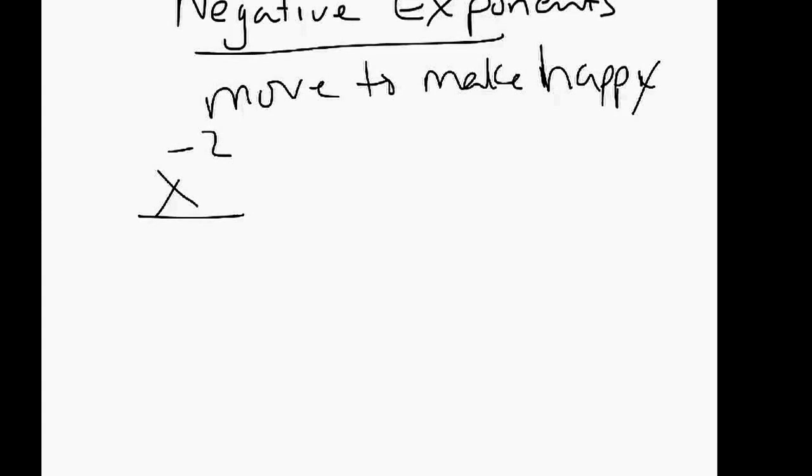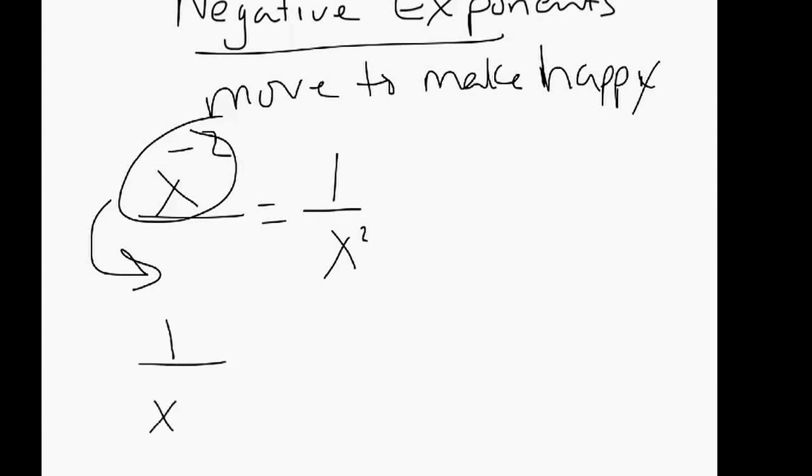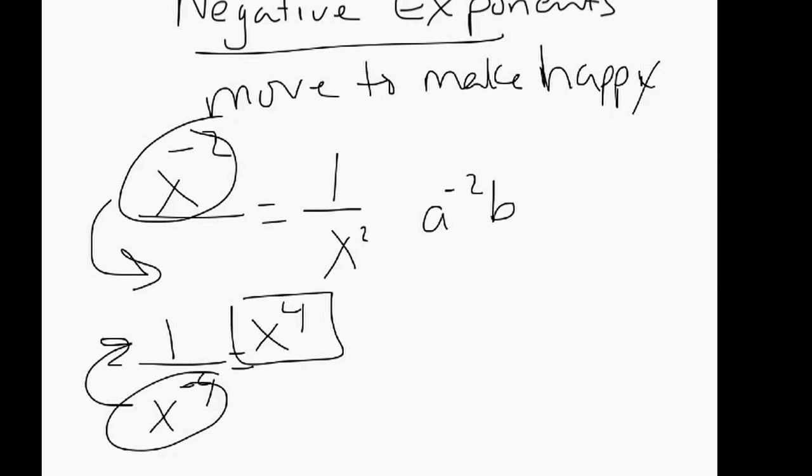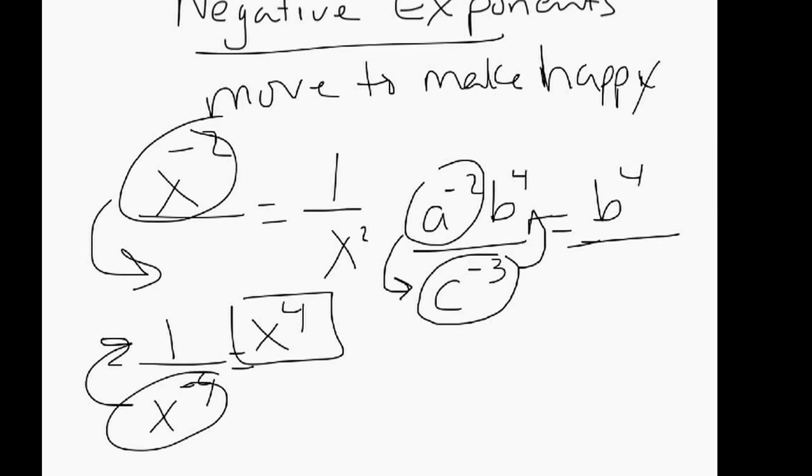Negative exponents move to make happy. I remember we talked about it in our class. If you have x to the negative 2 up there, to make him happy, he doesn't like being up there. You move him underneath, he becomes positive, you gotta have a one placeholder. If he's on bottom and unhappy, we move him to the top. That makes him happy and there wouldn't be anything underneath. If you have a whole series of things, this guy's unhappy up here, so you move him down. This guy's unhappy here, so you move him up. B to the 4's happy where he's at, so B to the 4 stays up there by himself. C to the 3 comes to join him. A to the 2 goes underneath. And it's all about moving people to where they're happy.